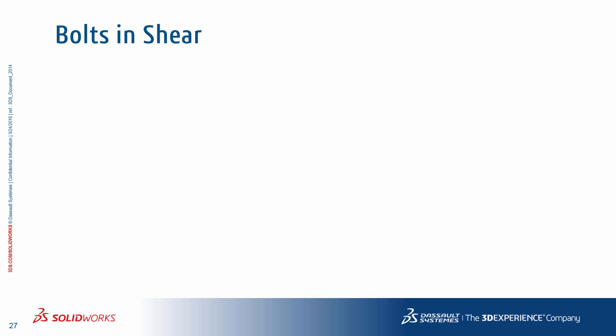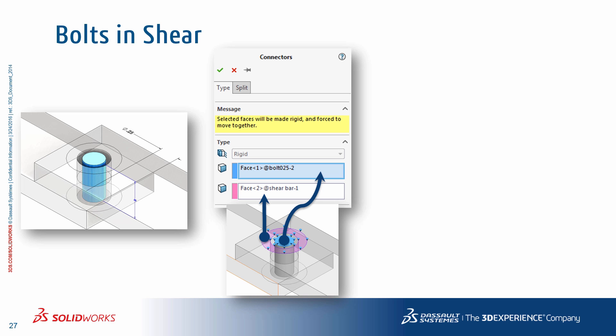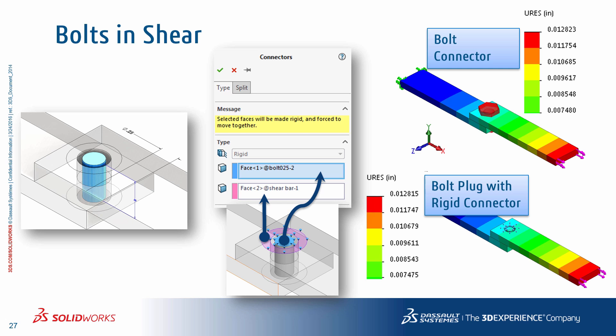Comparing this to a simple physical model where we actually put a solid bolt plug having the same shank diameter used in the bolt connector definition, and then using a rigid connector to tie the top face of the bolt plug to the bolt head contact face as well as the nut contact face, you can see that we get very similar responses in both scenarios. With the bolt connector the maximum displacement is about 0.0128 inches, and using a solid plug along with the rigid connector the displacements are more or less the same.